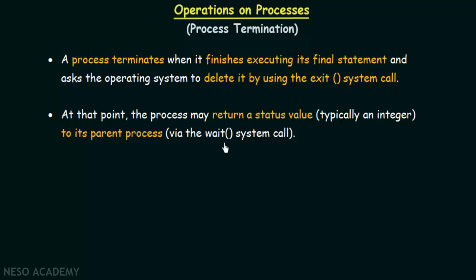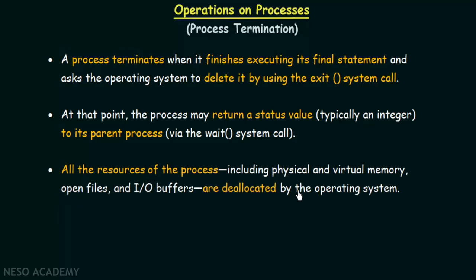This is done using the wait system call. All the resources of the process — including physical and virtual memory, open files, and input-output buffers — are de-allocated by the operating system. When a process finishes its execution and terminates, all resources held by that process are freed so they can be used by another process.